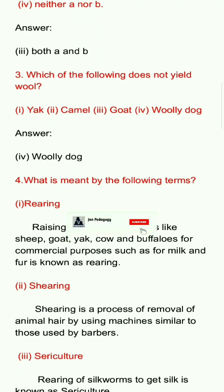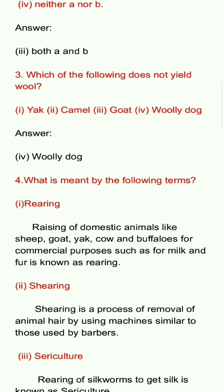Fourth question: What do the following terms mean? First one: rearing. Rearing is the raising of domestic animals like sheep, goat, yak, cow, and buffaloes for commercial purposes such as for milk and fur. This is known as rearing.